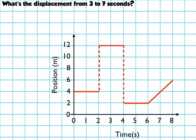First off, you know you're finding displacement when you're talking about two different points in time. So that's the 3 and the 7 seconds.